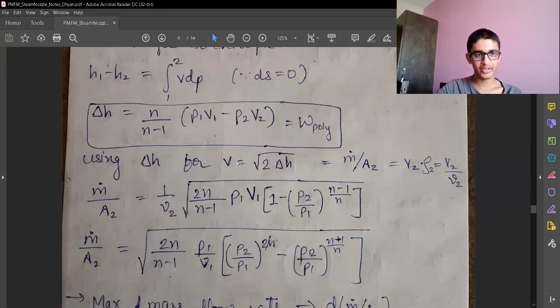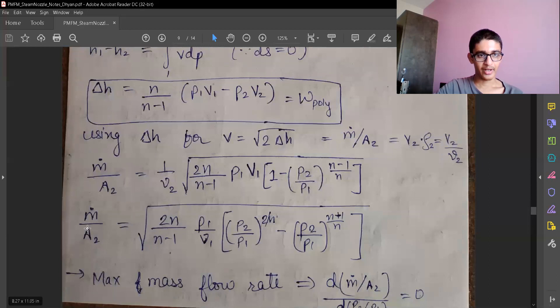So we also have V equals square root of 2dH, change in enthalpy and velocity. Velocity is also known as mass flow rate divided by area, and that is V2 rho2 equals V2 by gamma, that is specific volume. And we have combined the enthalpies and velocity relation to get this relation of M dot upon A2—that is velocity. We just combined those relations and taken P1, V1 outside. This is done to get an equation for mass flow rate.